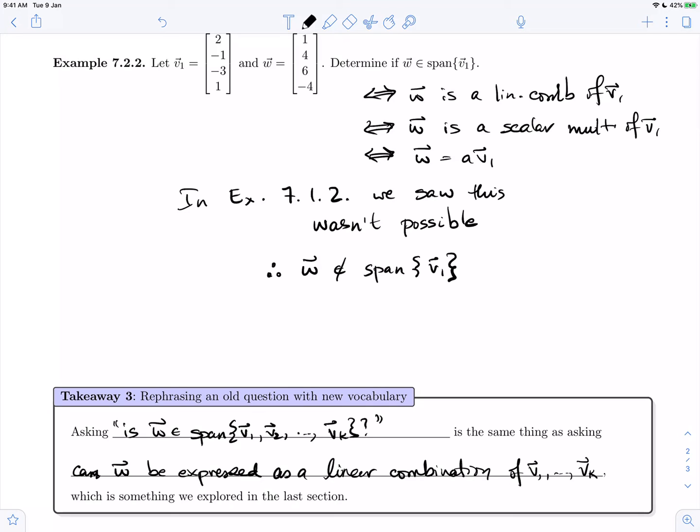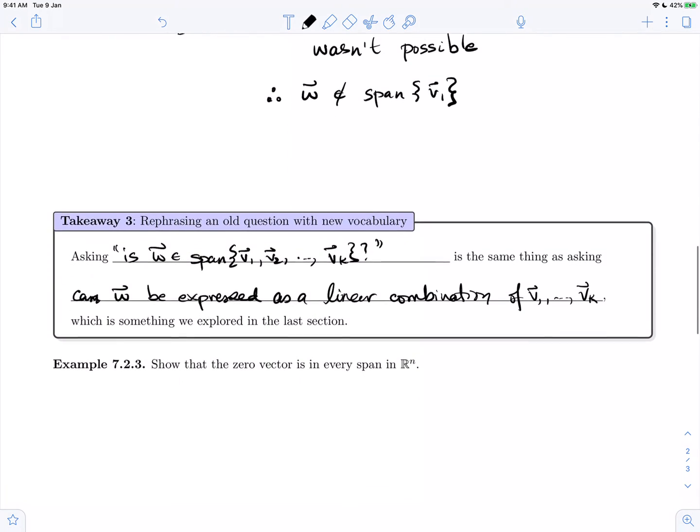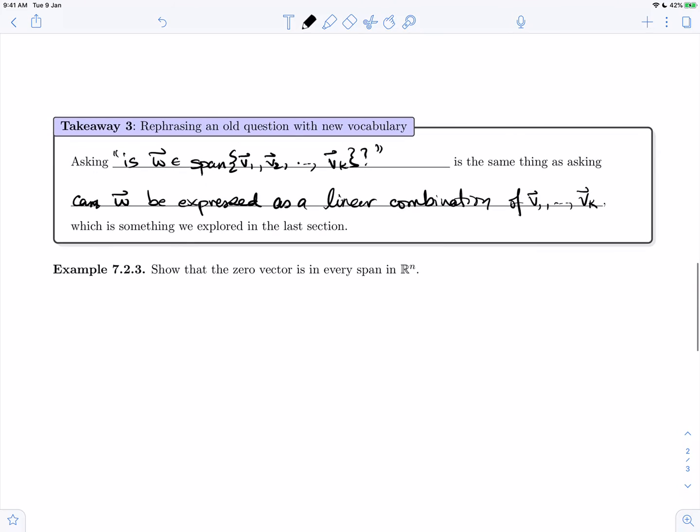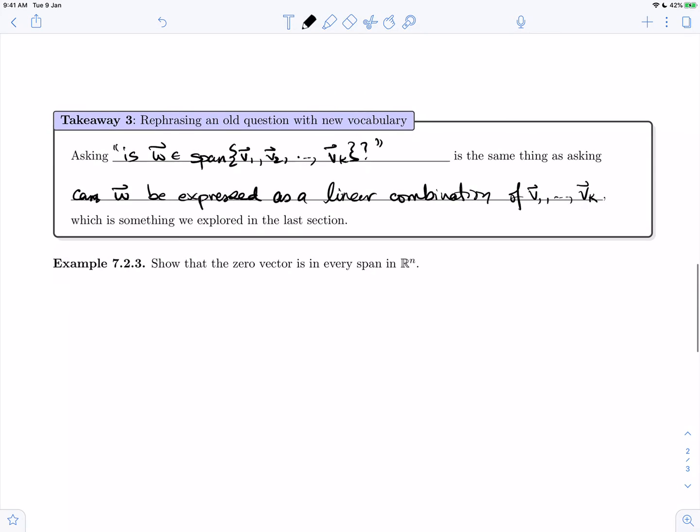So really, as far as we have so far, spans are simply rephrasing. They're collections of linear combinations. Let's do one last example, and then we will explore in the next video what is really going on. Example 7.2.3: Show that the zero vector is in every span in R^n. Let v1, v2, ..., vk in R^n be arbitrary.